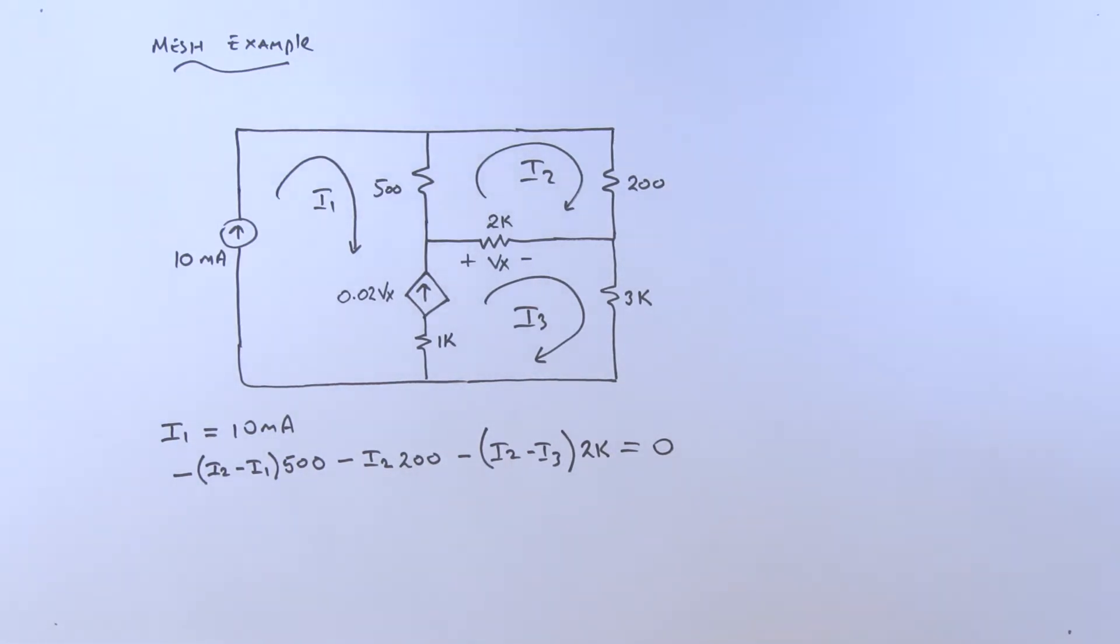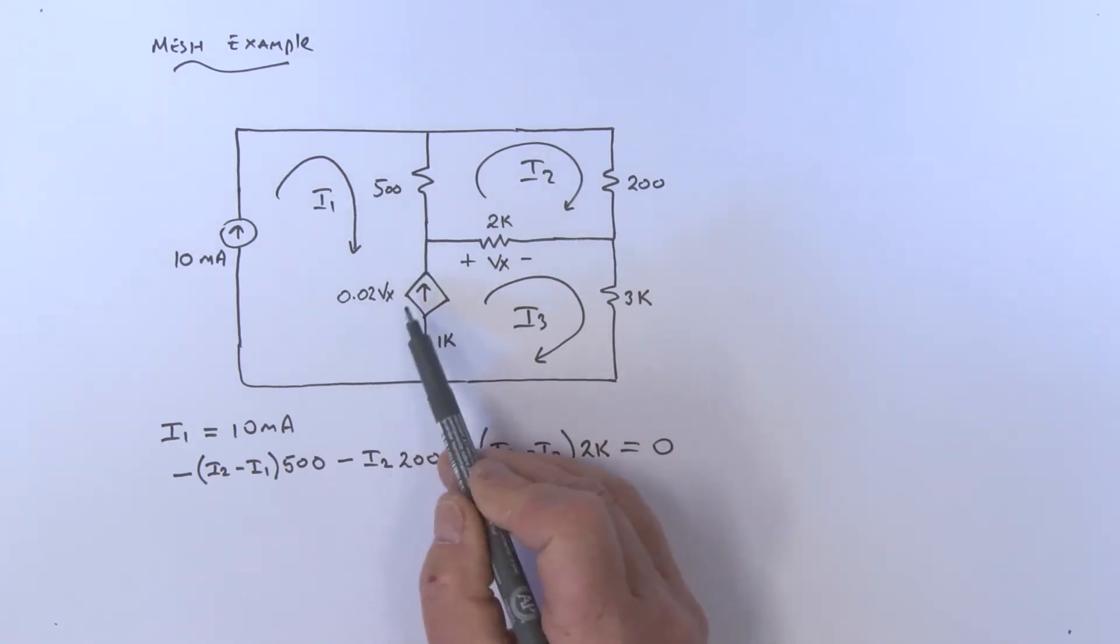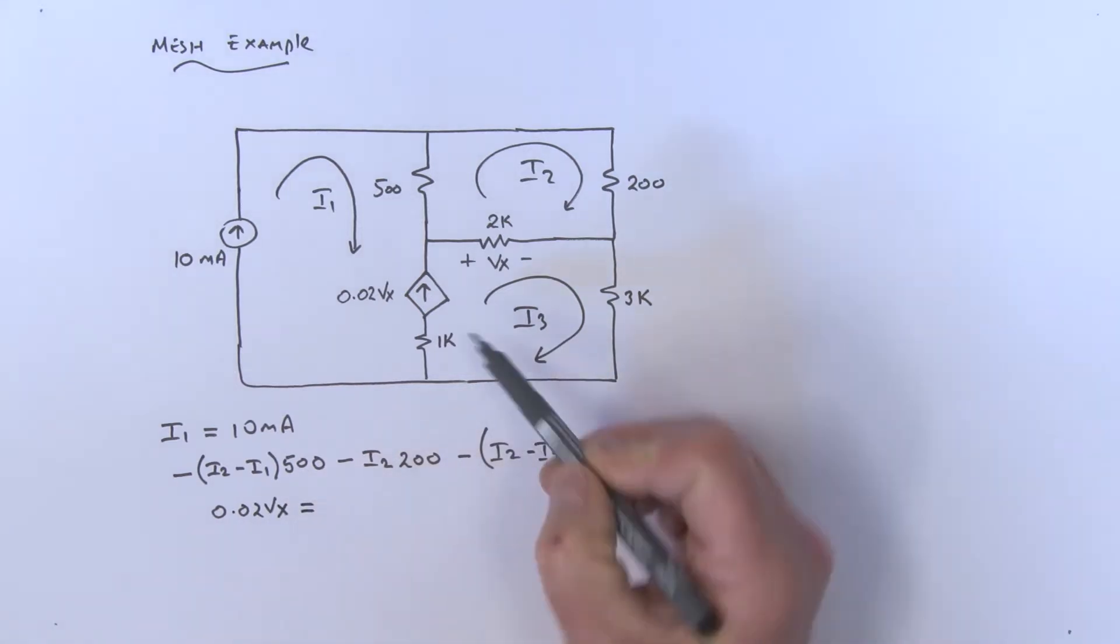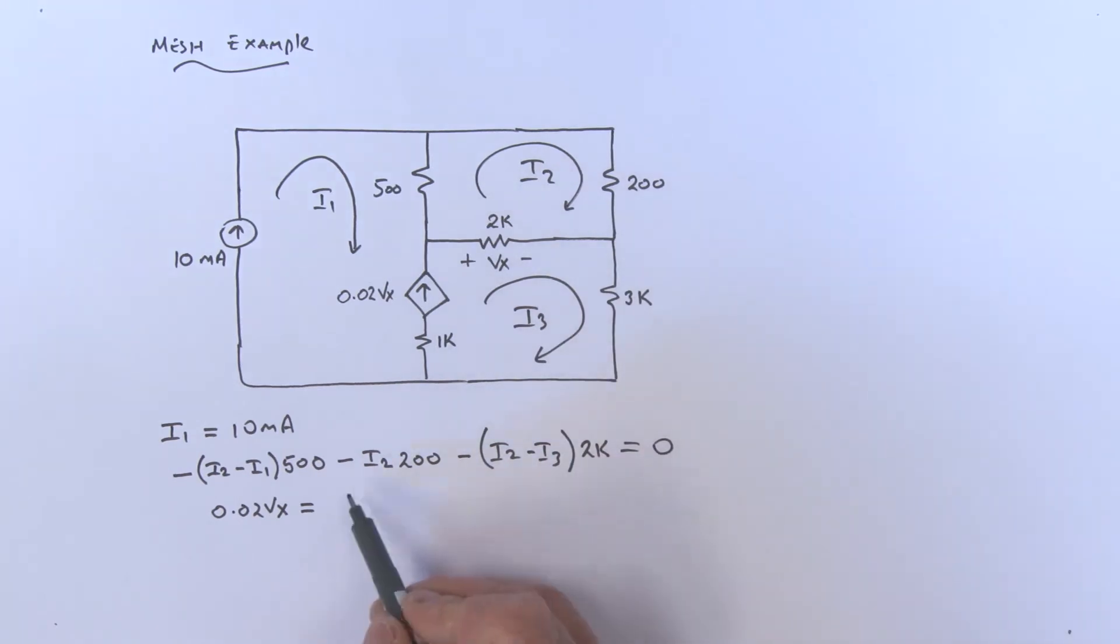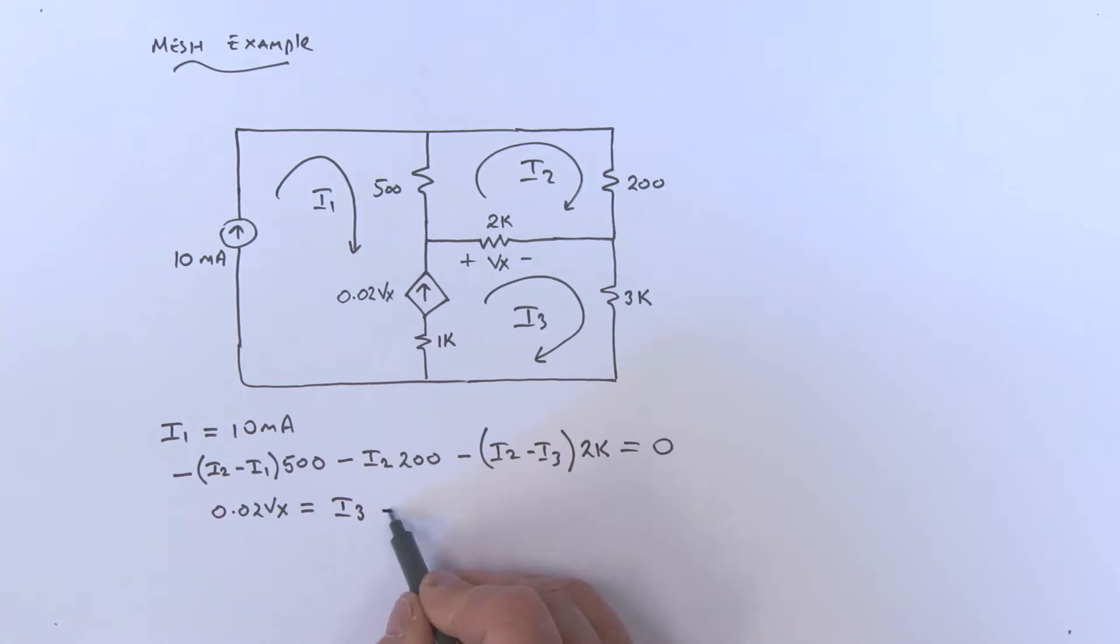Now, three unknowns in this problem, so I really need three equations. I don't know the voltage across that current source over there, but I do know something about it. I know it's going in this direction. So I could say that that current, which is 0.02 Vx, that current really is equal to i3 minus i1. So that's what that current's equal to.